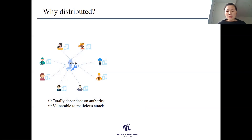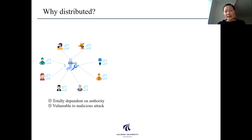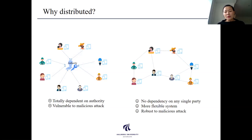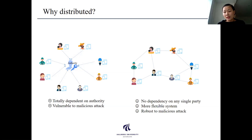Another thing we are focusing on here is the distributed system. Why is a distributed system important? Generally, a centralized system means that in the whole system we just send the data to the cloud or to a server so that the server processes and takes care of all the computation. In this kind of system it is very simple, but it is very vulnerable to attack — for example, if the central server is hacked, the whole system is broken. In a distributed system, we try not to depend on any single party. We require every single party to contribute to the whole system in terms of computation and communication. So even when one party is dropped or hacked, the whole system can still run. It is very flexible and robust to attack.